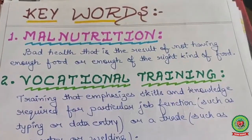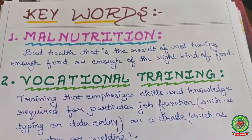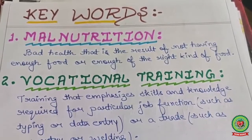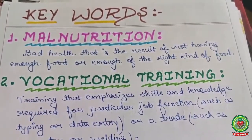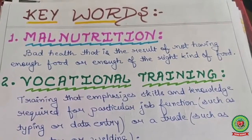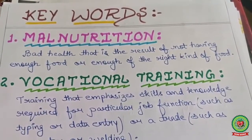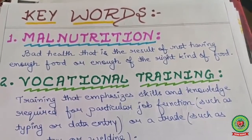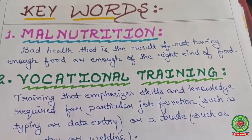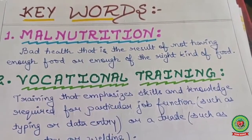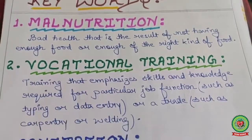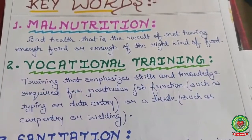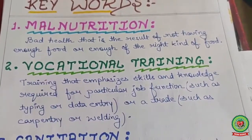First keyword: malnutrition — bad health that is a result of not having enough food or the right kind of food; when someone is not receiving proper nutritious food, it is considered malnutrition. Second keyword: vocational training — training that emphasizes skills and knowledge required for particular job functions, such as typing, data entry, carpentry, or welding.